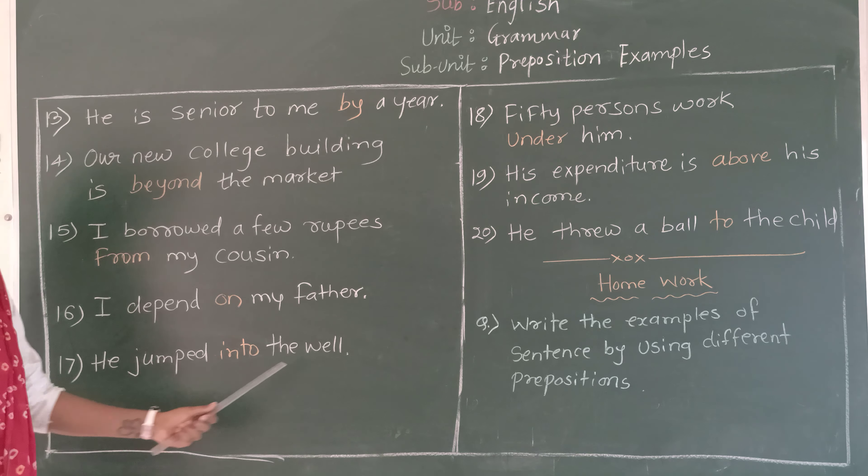Next: 50 persons work under him. Here we have used the preposition 'under'. Yaachas artha pannaas log taacha hata khali kaam karkatat. Under means khali. We can also use it as: the cat is sitting under the table.